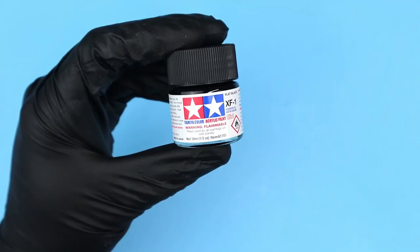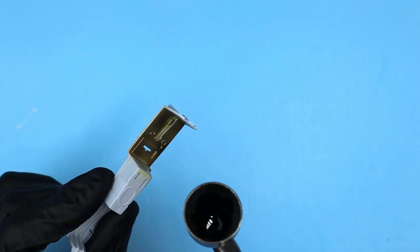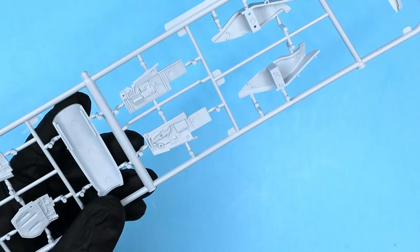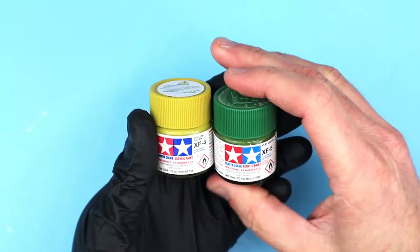Moving over to the cockpit, I started with my usual approach of spraying a coat of flat black on all of the parts. This serves as a black base that helps to provide more depth and contrast in the cockpit parts when I start laying down the interior green.